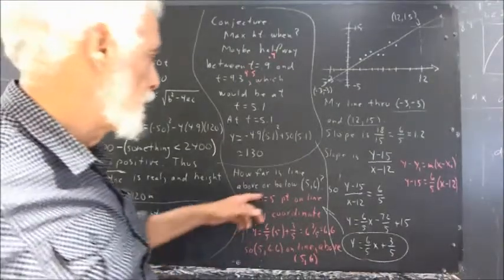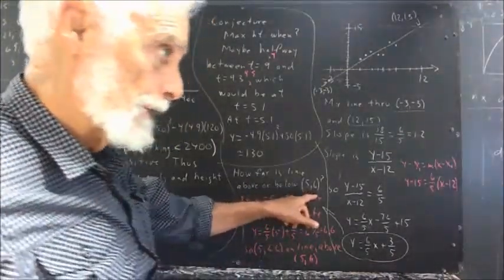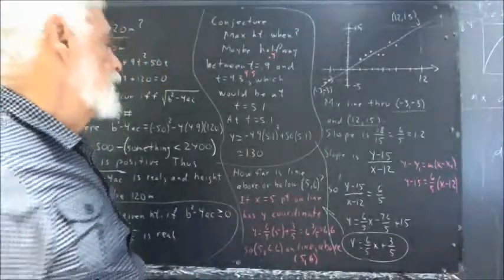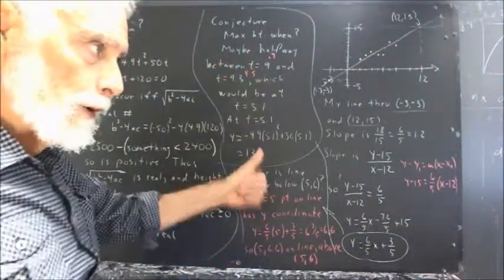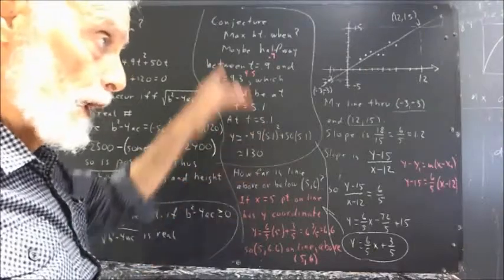Okay, again, the question is, how far is the line above or below the point 5, 6? Well, above or below is in the vertical direction, so that's in the y direction.